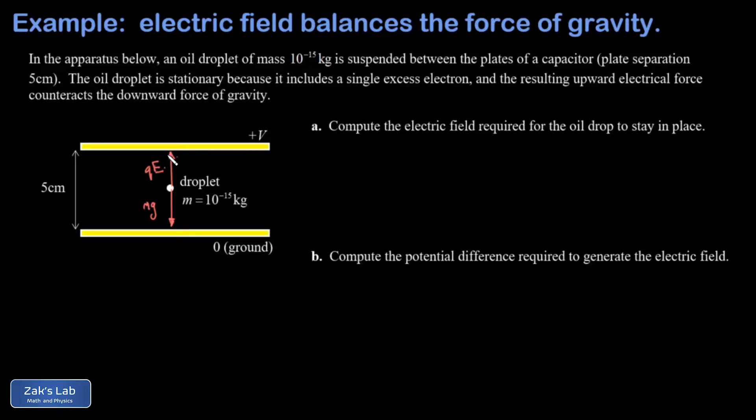So in part A, we're asked for the electric field required for the oil drop to stay in place, in other words, to balance the force of gravity. So if we get this oil droplet to be at equilibrium, then mg, the force of gravity, has to be equal to Q times E, where our charge is given by the elementary charge, the charge on the electron.